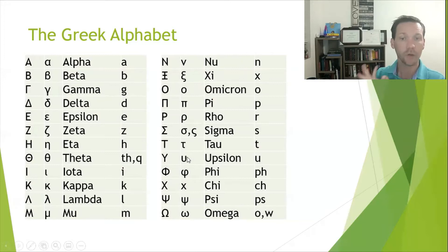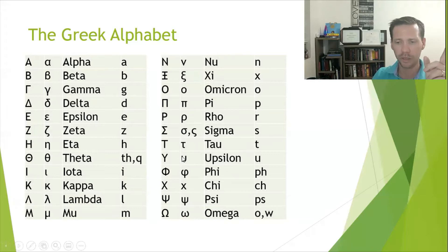Tau you know — capital T, lowercase T, says 't.' Upsilon — this is one we haven't done yet. It looks like a lowercase u; it's called upsilon, says 'u.' The capital letter is a Y.